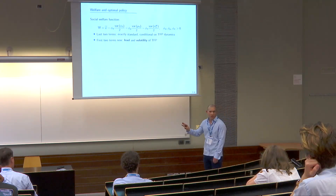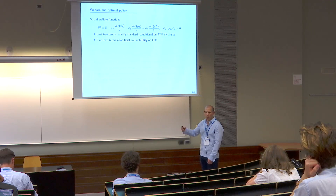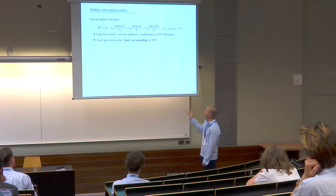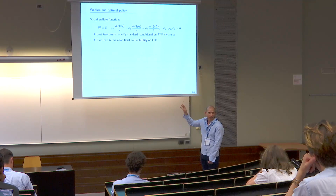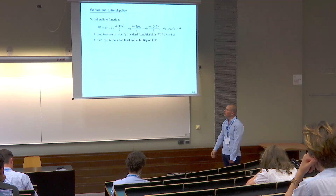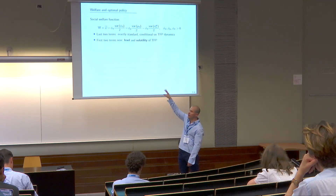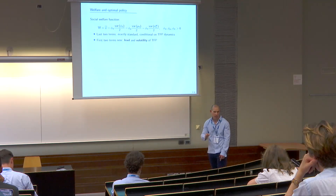Turning to the normative implications: the social welfare function is a second-order approximation to household utility with four terms. The last two are completely standard — the variance of the output gap and the variance of inflation, even with the same weights as in the textbook model. What's brand new are the first two terms: the level of TFP and the volatility of TFP. The central bank now balances these four objectives, including what it can do to the allocation.